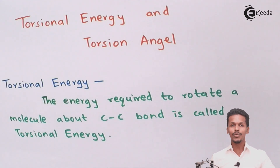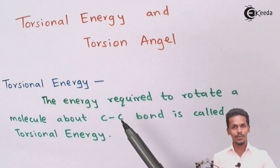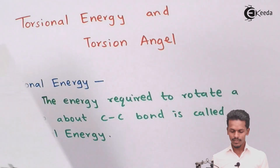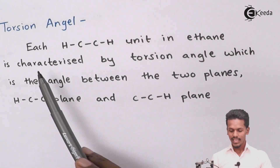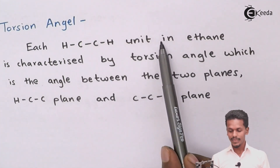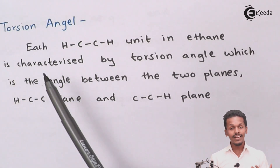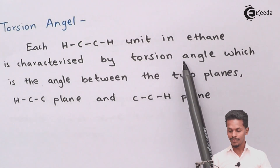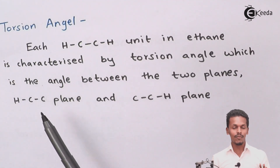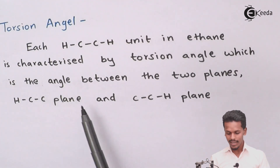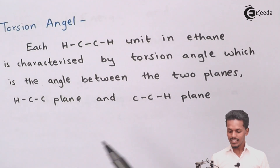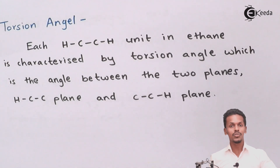The next topic is the torsional angle. Each hydrogen-carbon-carbon-hydrogen unit is characterized by the torsional angle, which is the angle between two planes — the HCC plane and the CCH plane. This is also known as the dihedral angle.